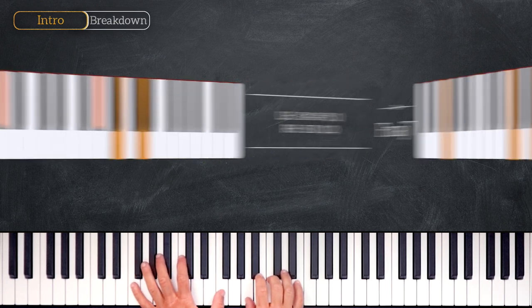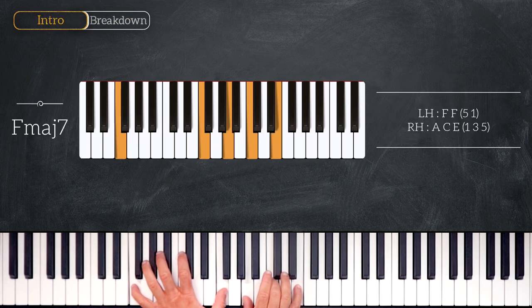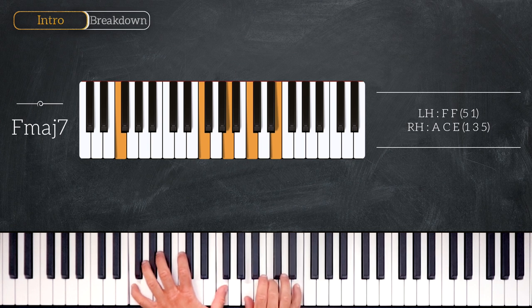Following this chord we'll play an F major 7, playing octave F on the left hand and A, C, E on the right.